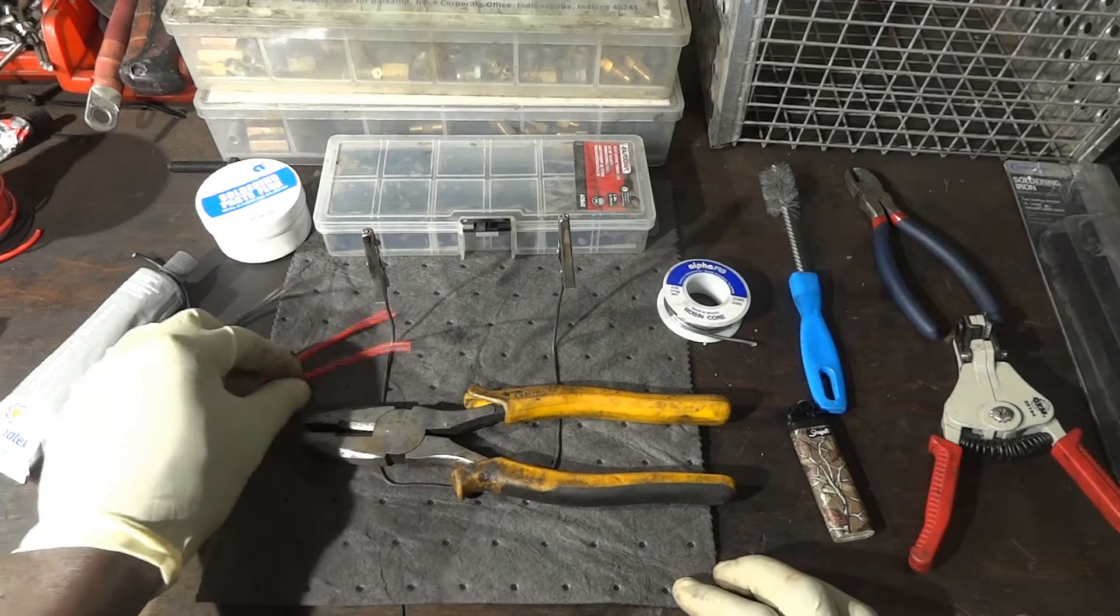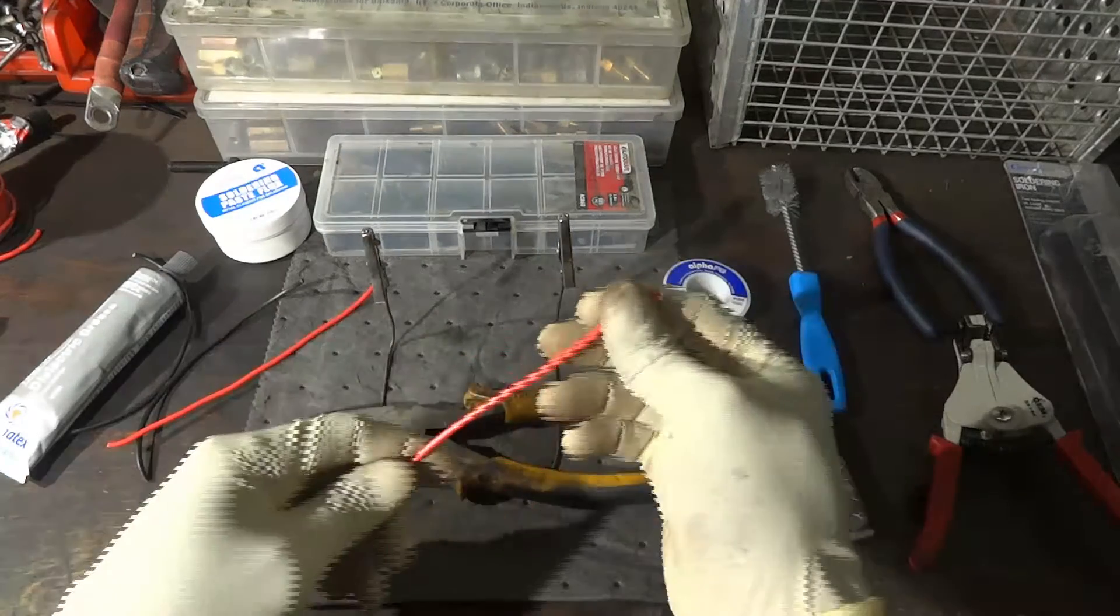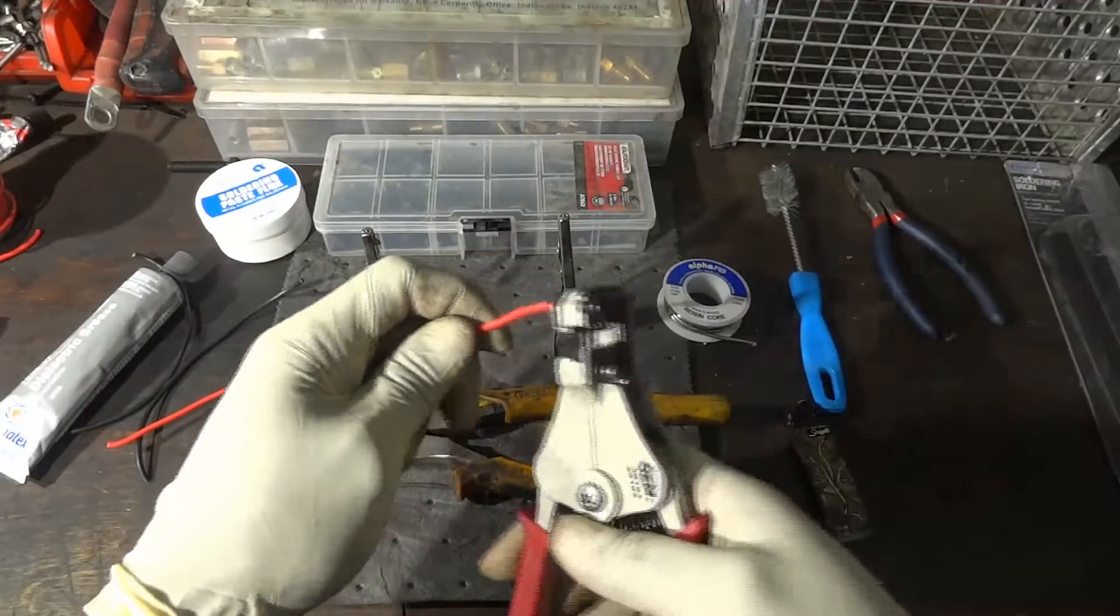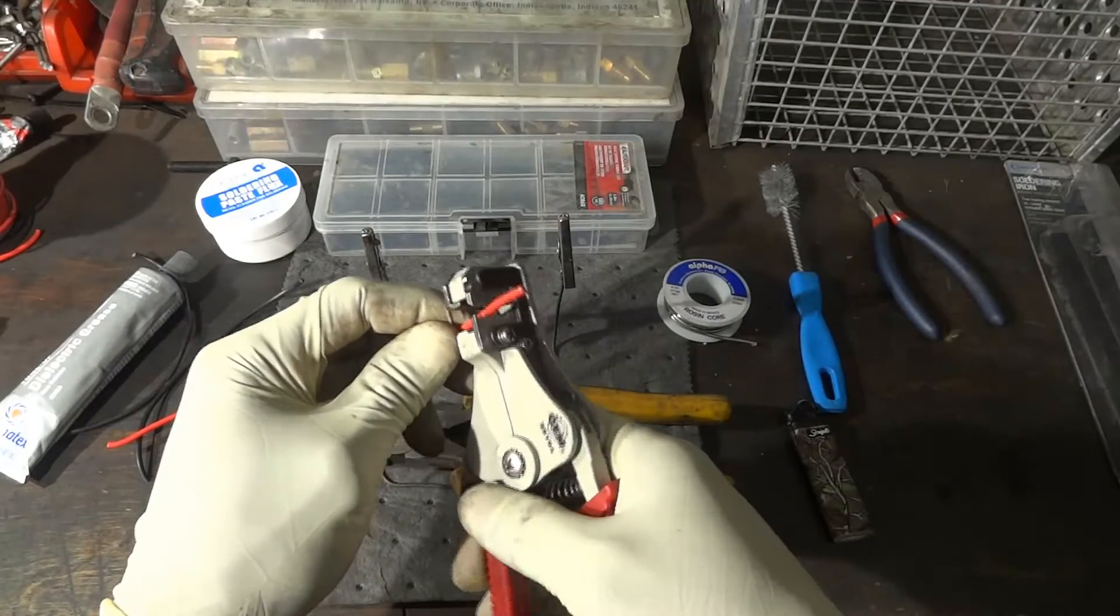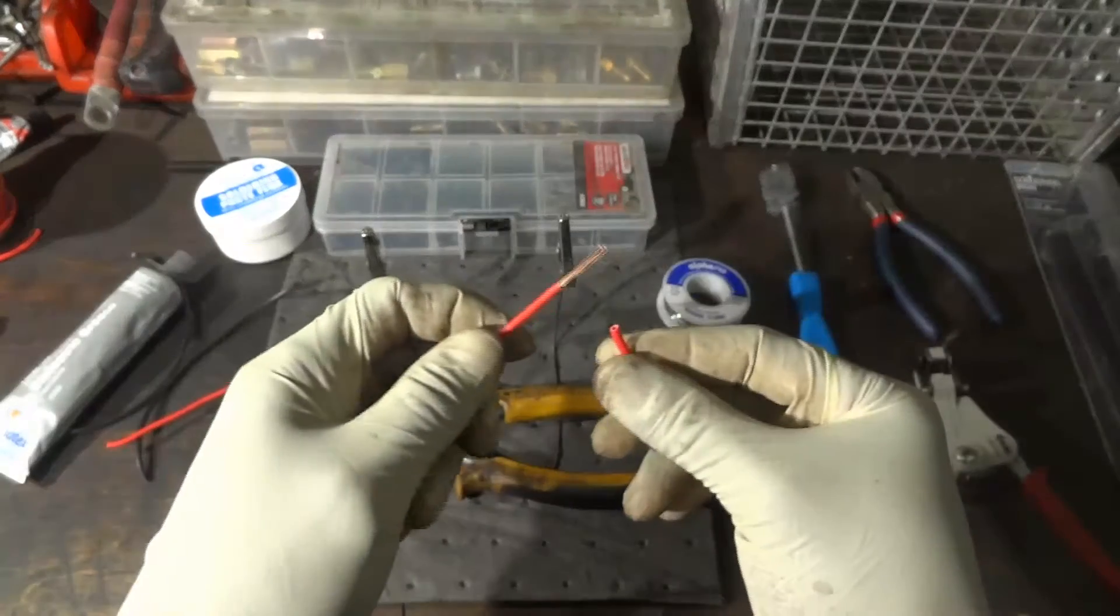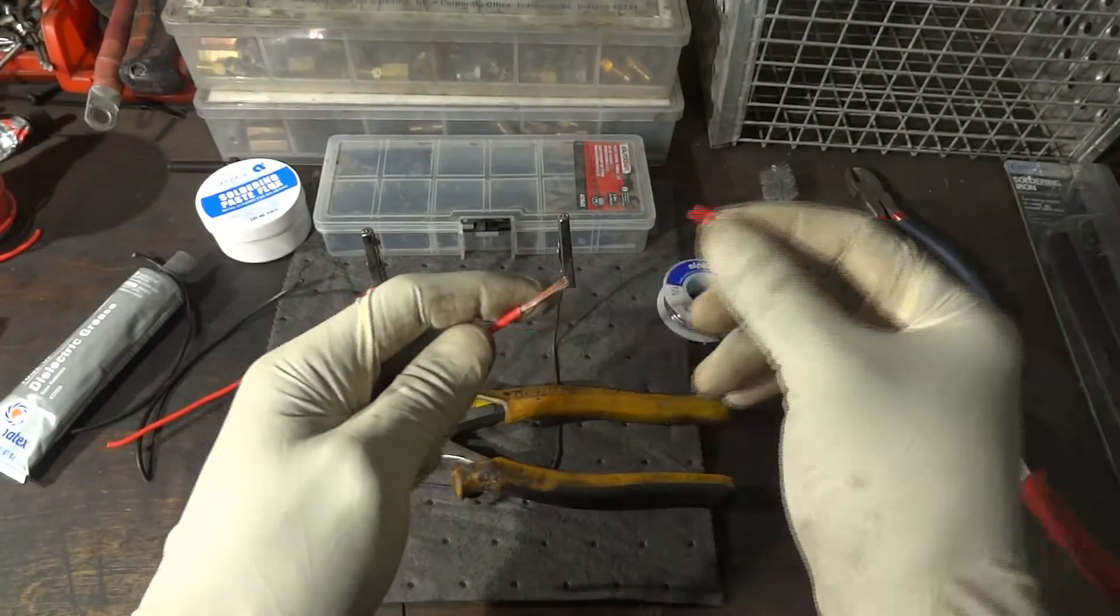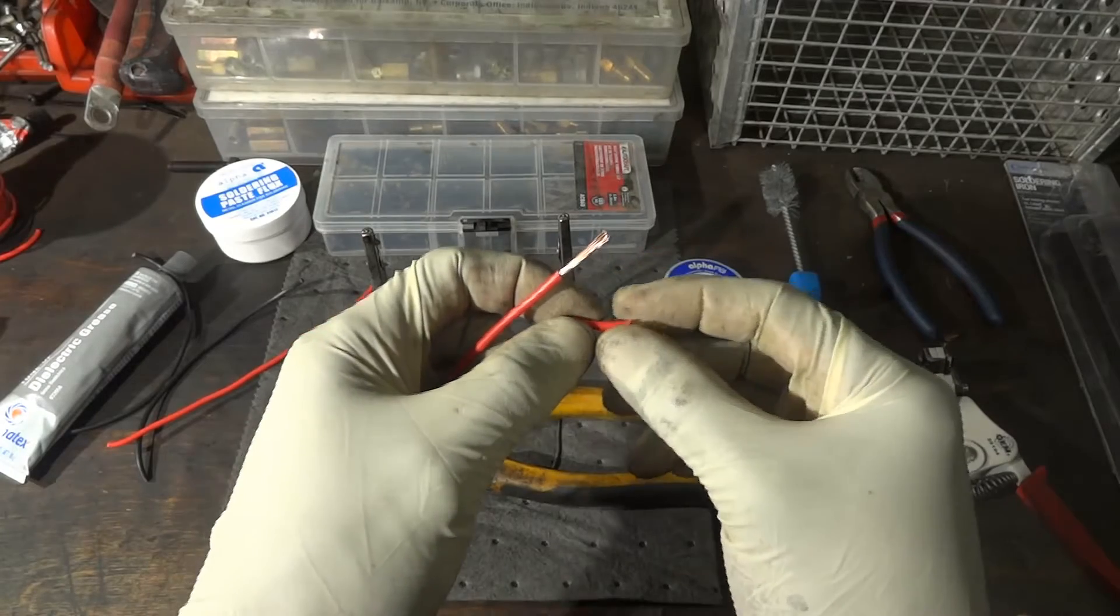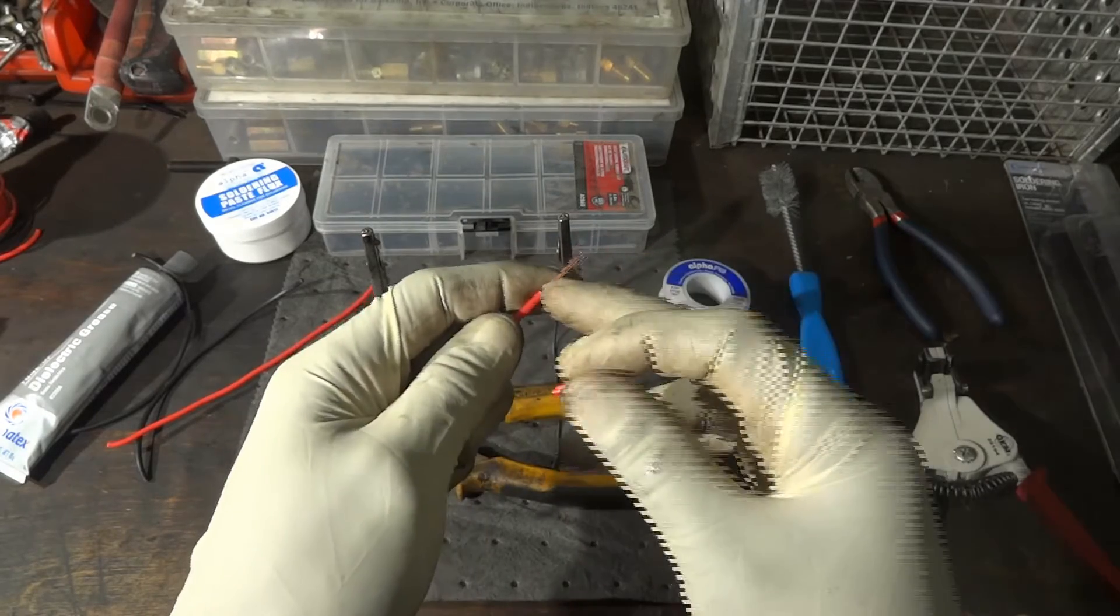So now let's strip the insulation from our wire. So I want to point out that when you're stripping the insulation from the wire, do not strip out some wire strands.